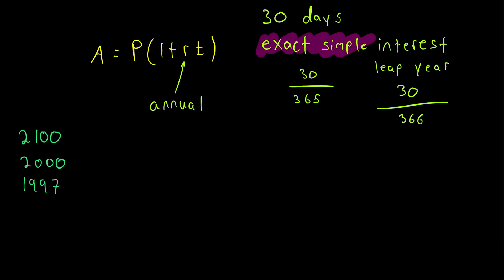Remember, it's just a convention for converting the number of days to the number of years when dealing with annual simple interest, in which we convert days to years by taking the number of days and dividing it by 365, unless it's a leap year, in which case we divide by 366. So, I hope this video helped you understand exact simple interest.